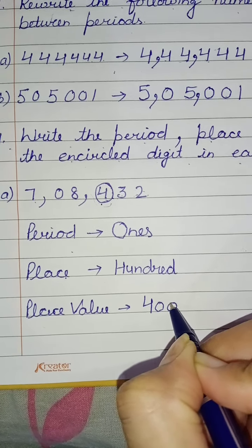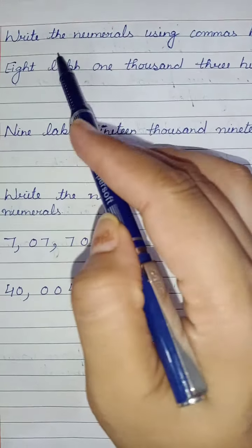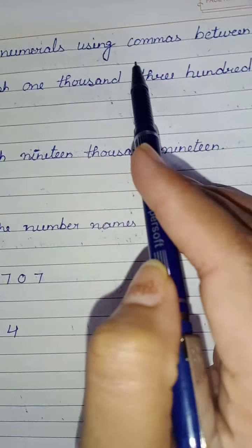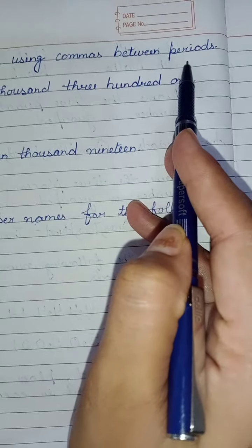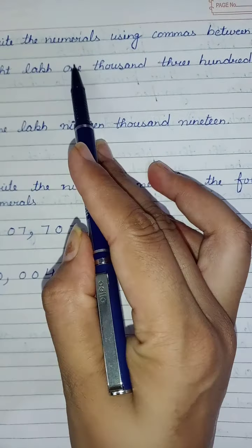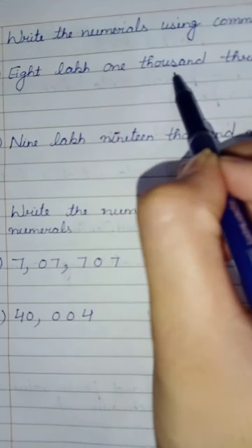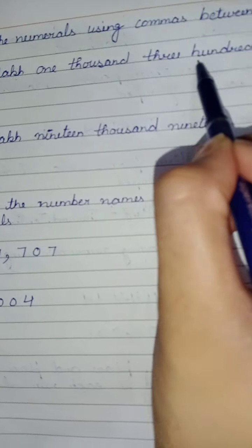Next question is: Write the numerals using commas between periods. Now we are given the number names. We have to write numerals and insert commas. See how to do it. Read first: eight lakh one thousand three hundred one.